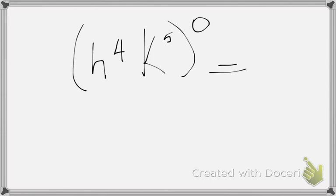And the very last one is h to the 4th. Notice how big I am writing this. To the 5th. All of it to the 0. What is my answer? 1. 1. Always 1. 1.